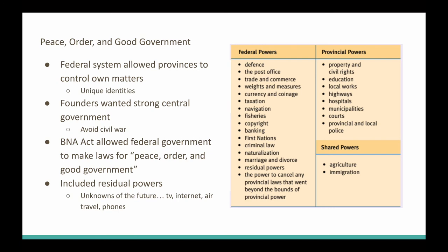Canada believes in peace, order, and good government — not life, liberty, and the pursuit of happiness like in the United States, but peace, order, and good government. One of the compromises — George Brown's idea — was that the federal system allowed provinces to control their own matters, because each province had its own unique identity. Alberta is different from the maritime provinces, and the federal system allows for that. The founders wanted a strong central government because they were scared of having a civil war, so the BNA Act allowed the federal government to make laws for peace, order, and good government.